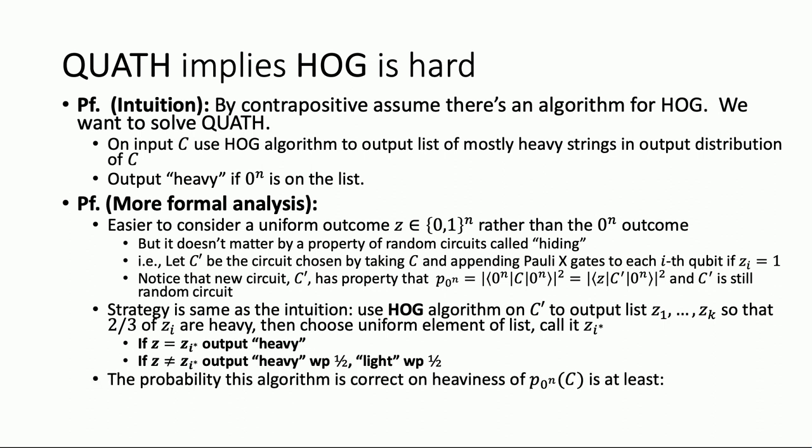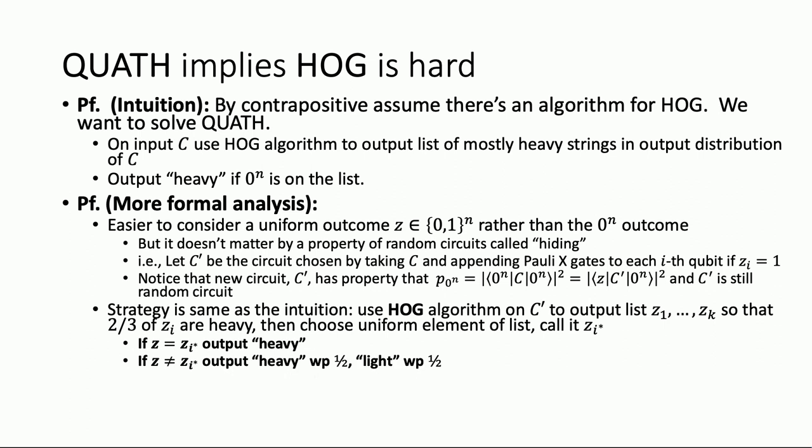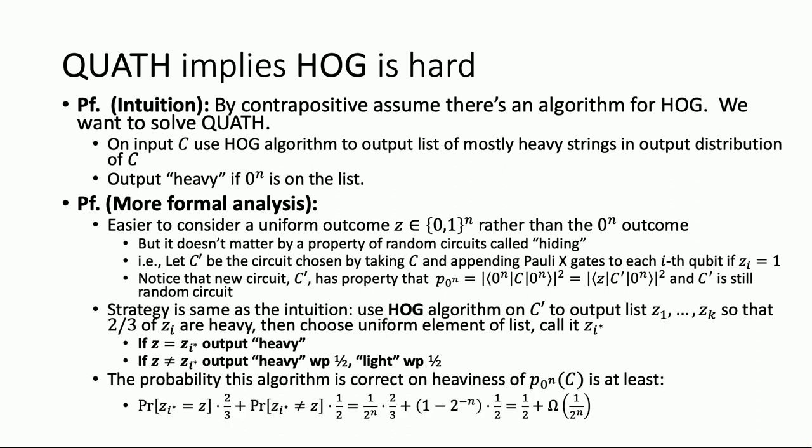How do we analyze this? There are two ways you can get the answer right. One is if you get a hit — what probability does that occur with? A uniformly random outcome, uniformly random thing you're looking for: one over 2^N, times two-thirds, because two-thirds of the guys are heavy in the observed list. Or you get a miss — that occurs with probability one minus one over 2^N — but then you flip correctly, which is probability one-half because it's the median. You do the algebra and get that this is one-half plus a bias that's at least one over 2^N.